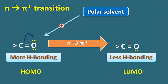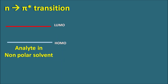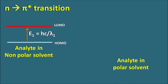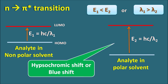So a polar solvent stabilizes the HOMO, thereby reducing the n to pi* transition tendency. The energy states in a non-polar solvent give E1 = hc/λ1, but in a polar solvent the HOMO is stabilized, so the energy gap E2 = hc/λ2, where E1 < E2, meaning λ1 > λ2. So in the presence of a polar solvent, lambda max is decreased. A polar solvent produces a hypsochromic shift (blue shift) on the n to pi* transition.